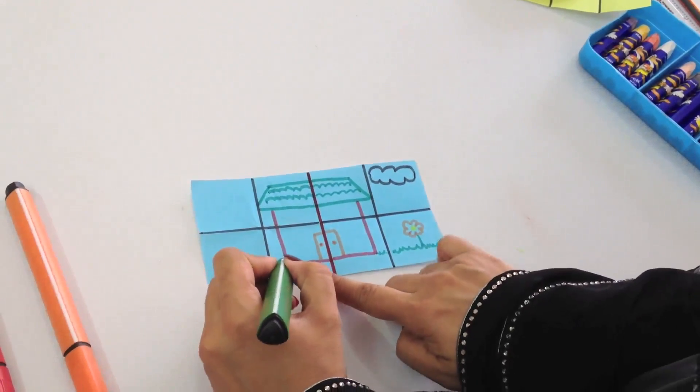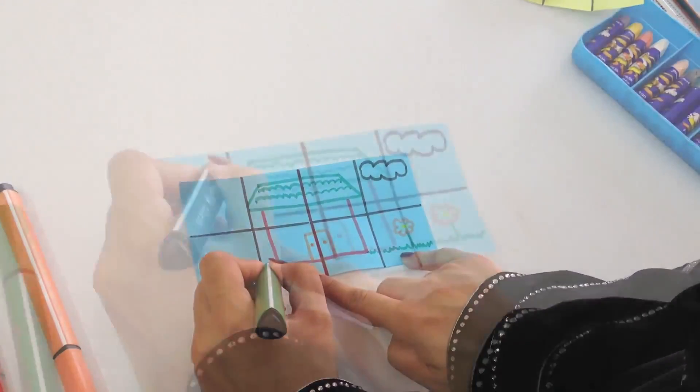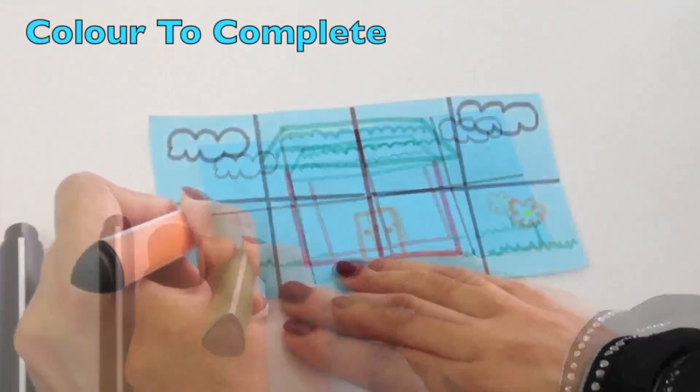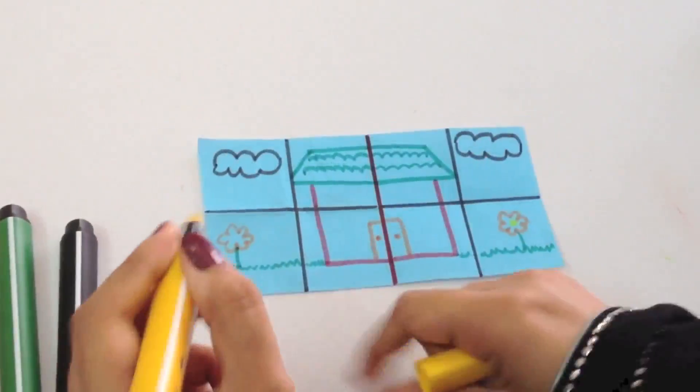Now we are going to do the grass and then complete the picture. Try to draw as symmetrically as possible.